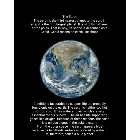Earth is the third nearest planet to the Sun and the fifth largest planet. It is geoid in shape — geoid means Earth-like shape. There are favorable conditions that support life on Earth: it is neither too cold nor too hot, it has water and air, and air has life-supporting gases like oxygen. Because of all these reasons, Earth is a unique planet in the solar system. From outer space, Earth appears blue because its two-thirds surface is covered by water, and it is also known as the blue planet.